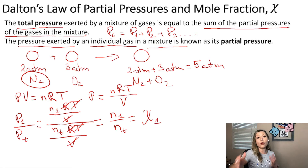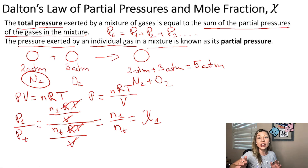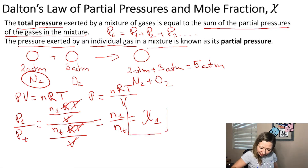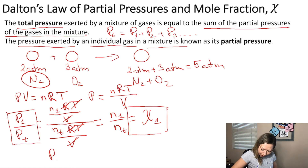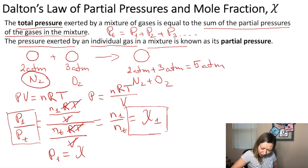This is the mole fraction of component 1. Don't mix it up — this symbol is not the letter X; it is the Greek letter chi (χ). We can rearrange this equation using chi_1, P1, and P_T to calculate the partial pressure of any component. So the partial pressure of component 1 equals the mole fraction of that component multiplied by the total pressure.